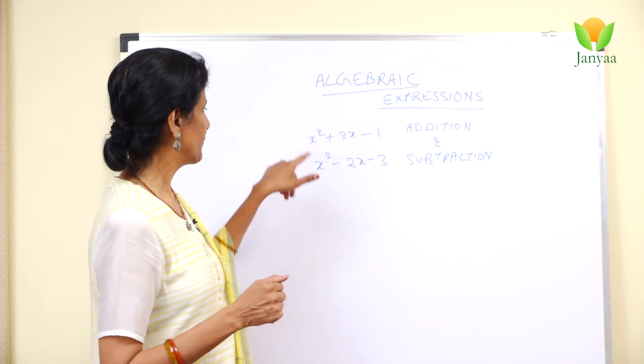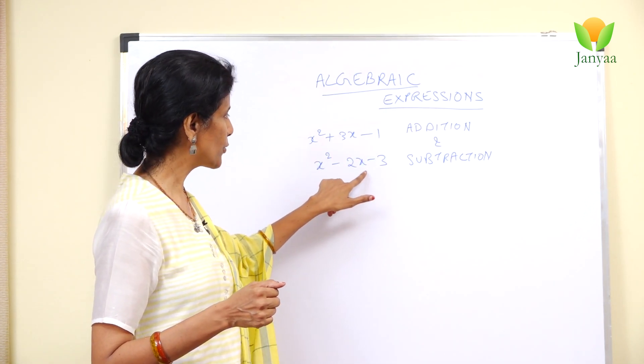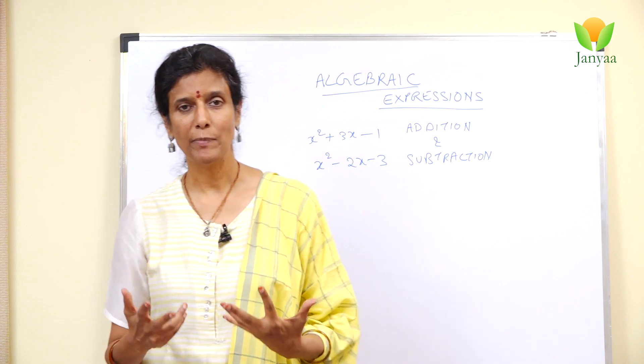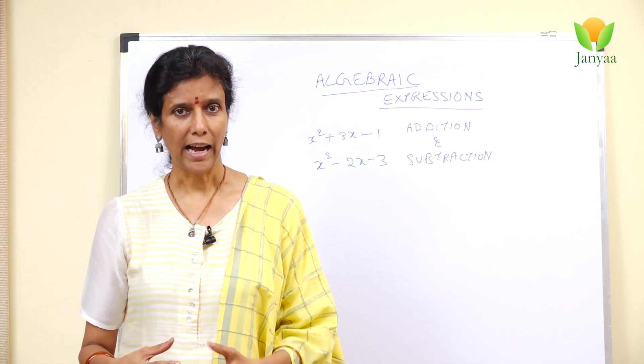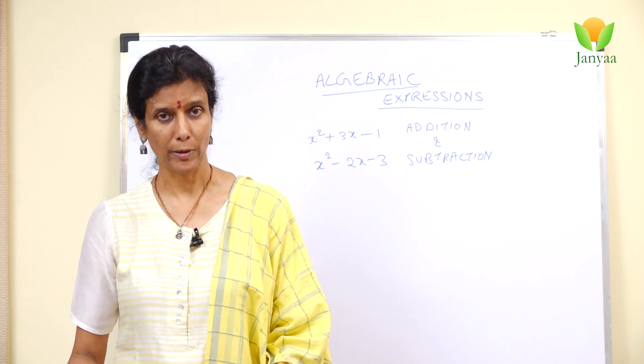So let's take two equations: x squared plus 3x minus 1 and x squared minus 2x minus 3. As I mentioned before, we are going to use tiles, and in another video I have already explained what these tiles represent.